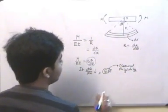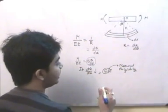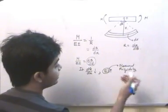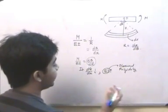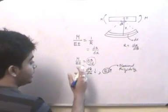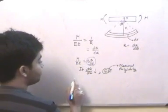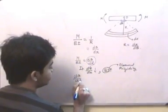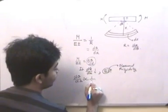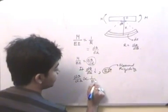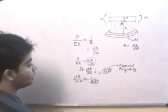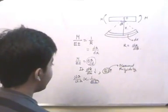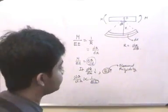EI is the flexural rigidity. Stiffness is essentially the inverse of flexibility, and rigidity and stiffness are related terms. Therefore dθ/dx is inversely proportional to EI, the flexural rigidity. And this is all for this lecture.